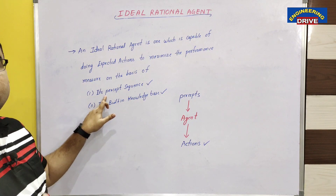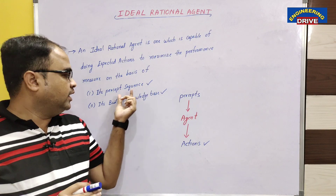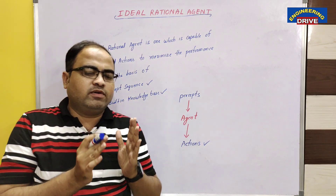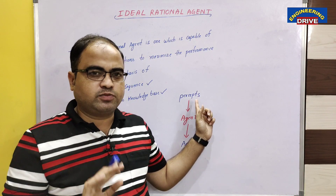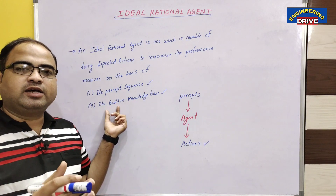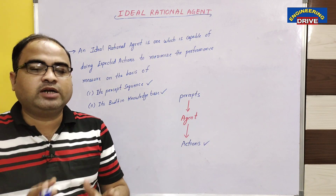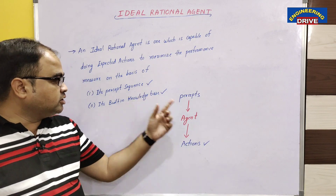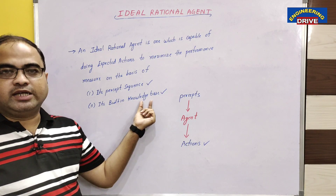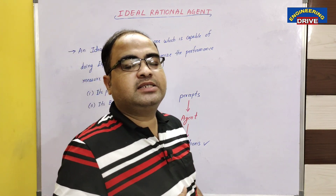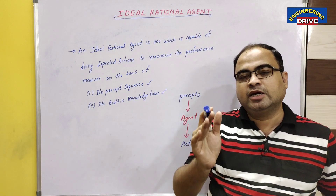You know what is the meaning of percept sequence? It is a sequence of inputs. Whatever inputs the agent has received, the agent should look at those inputs first. The second point is the built-in knowledge base. If the agent has kept a record of all the percepts and actions in its database, then the agent can decide whether an action is correct or wrong. So an ideal rational agent will maximize the performance measure by using two things: one is the sequence of percepts, and the second is its built-in knowledge base.